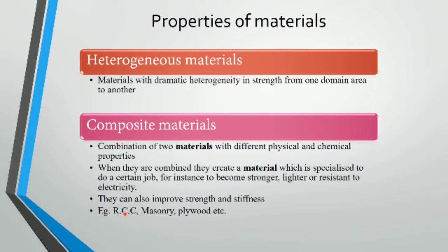Examples of composite materials include RCC, masonry, and plywood. In RCC, cement, aggregate, and sand — all materials with different physical and chemical properties — are combined. In masonry, mortar is used. Plywood is also a composite material.